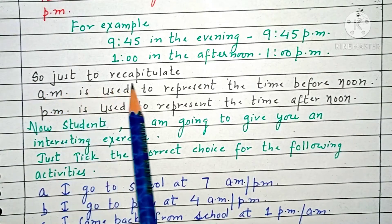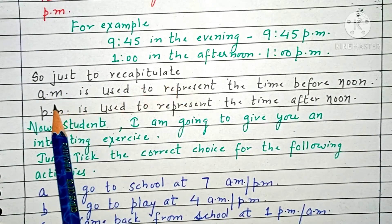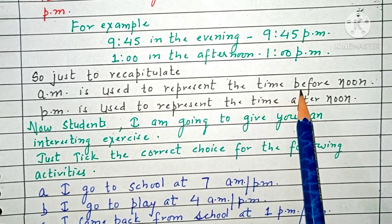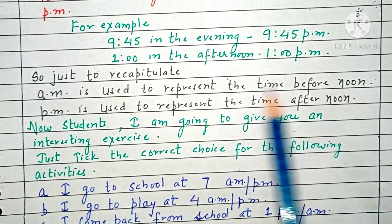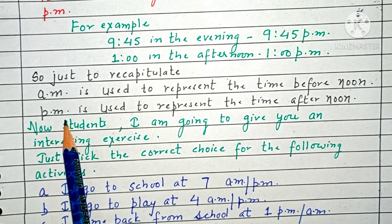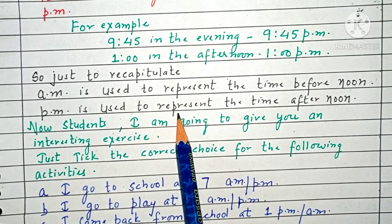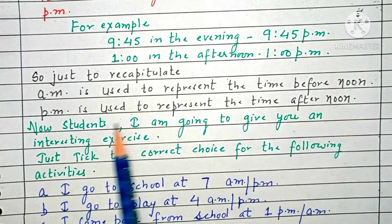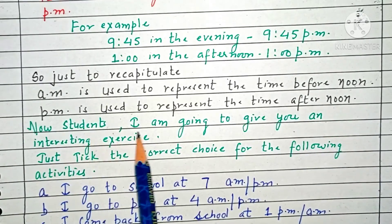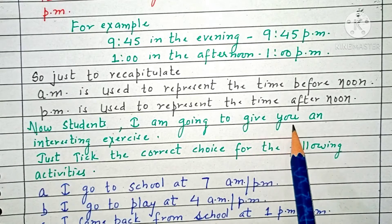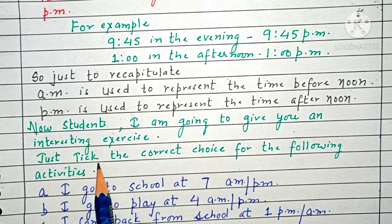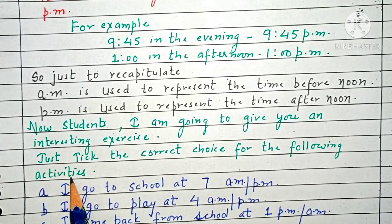Just to recapitulate: AM is used to represent the time before noon, and PM is used to represent the time after noon. Now students, I am going to give you an interesting exercise. Just take the correct choice for the following activities.